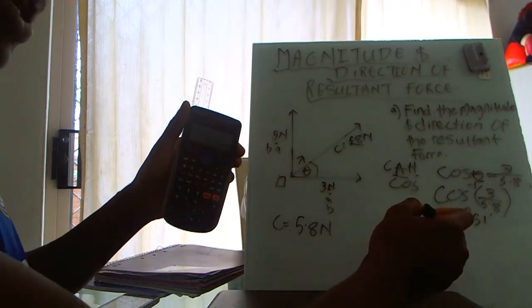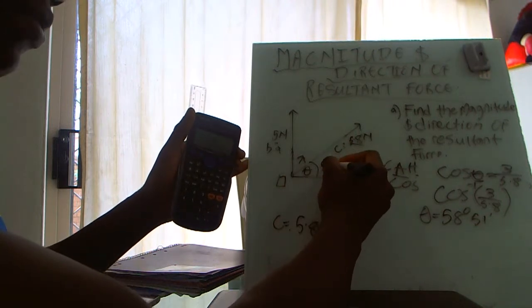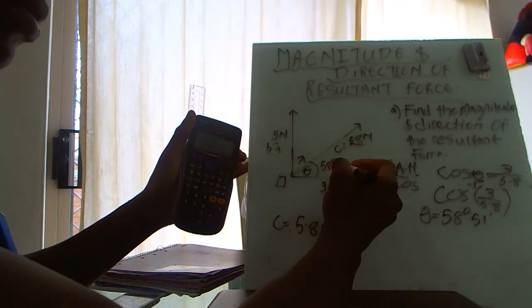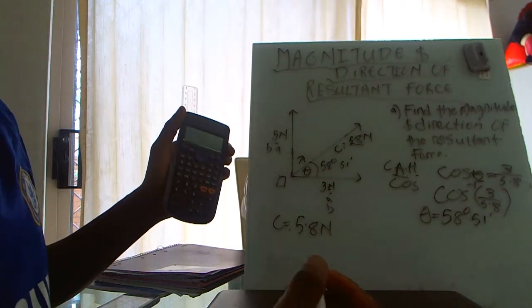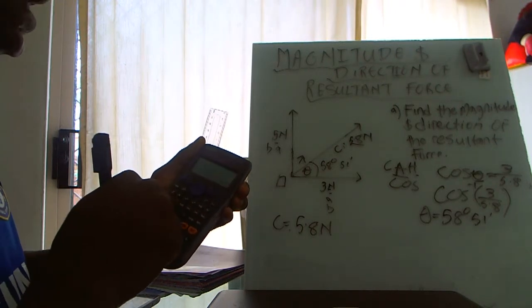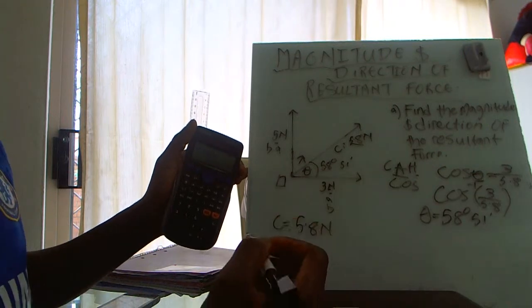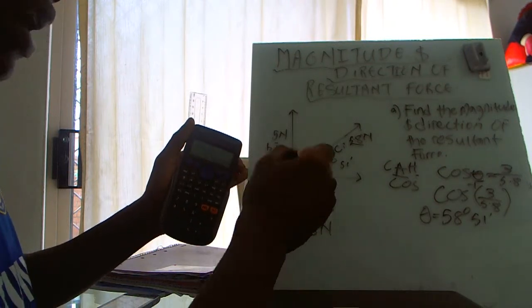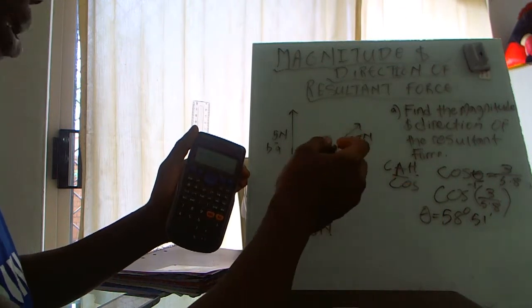And that is our angle, this angle over here. Or you could just simply say 59, it depends on how you want to do it. Now we have the angle, but not the direction.